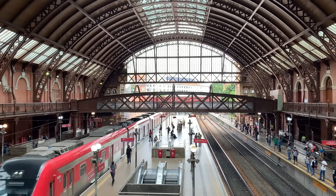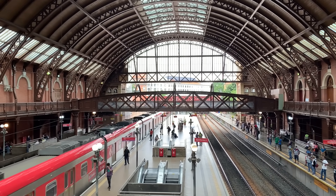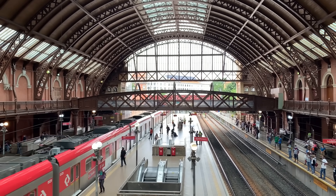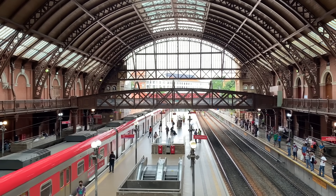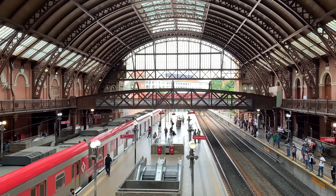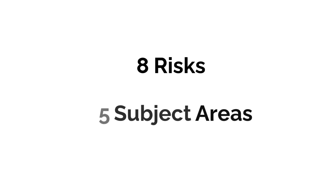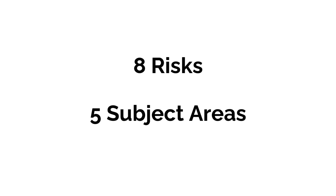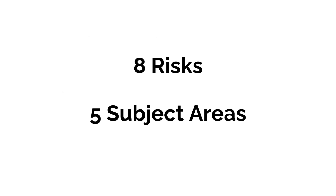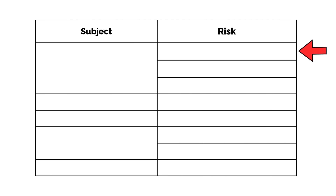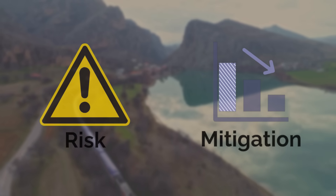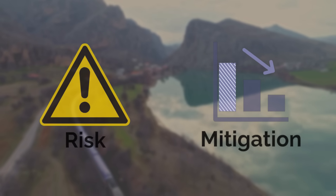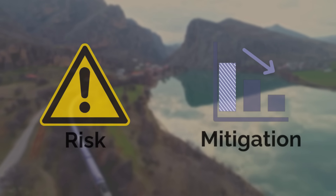By the end of this video, you'll know these typical root causes of derailments. If you ever hear about a derailment, you'll be able to see which one of these categories the cause falls into. There are eight main risks that can be grouped into five subject areas. We will cover each risk in turn, looking at the source of each risk, and also touch on how track engineers mitigate them to stop trains derailing.